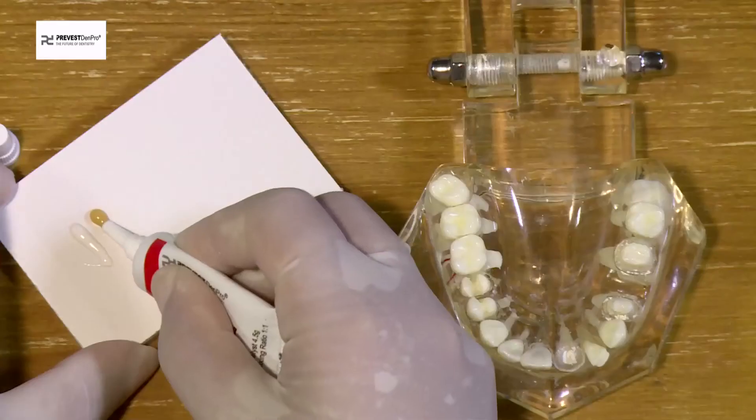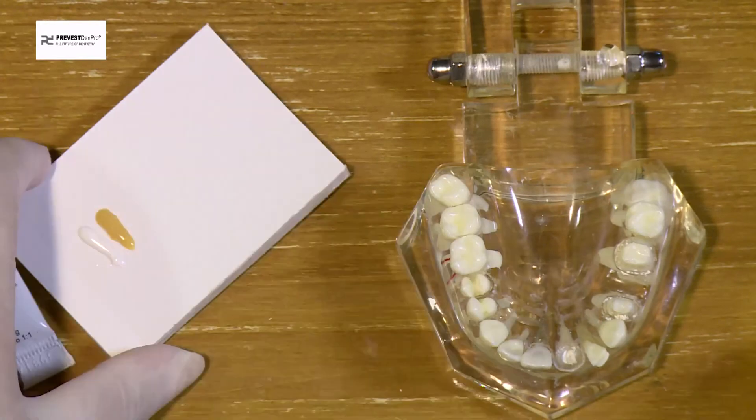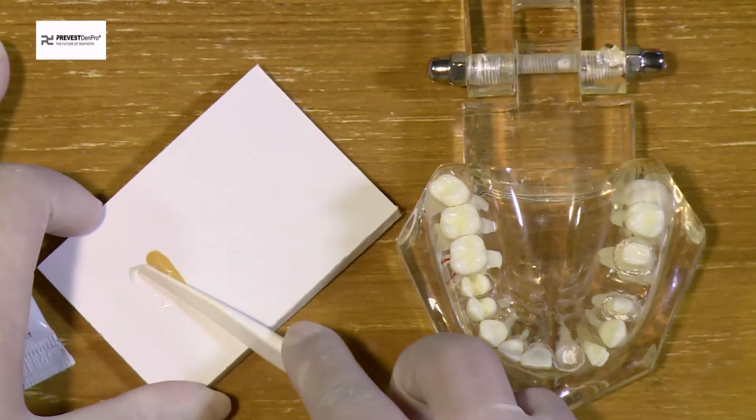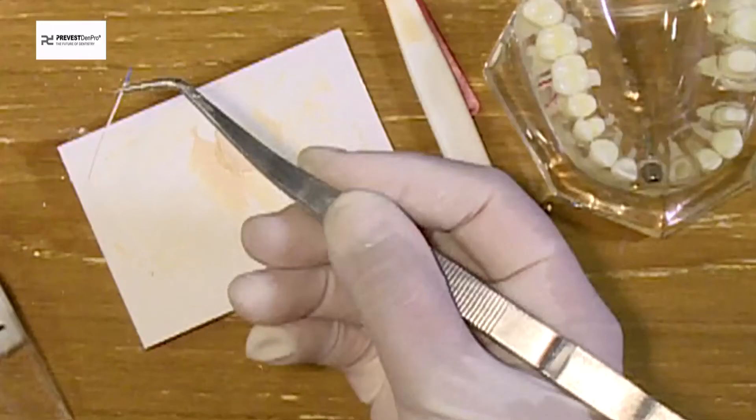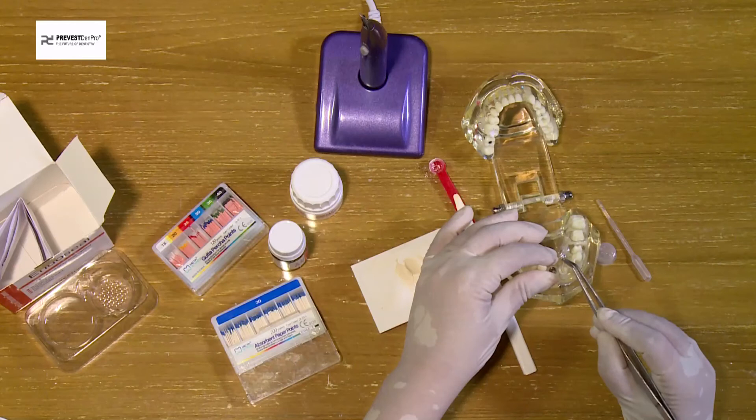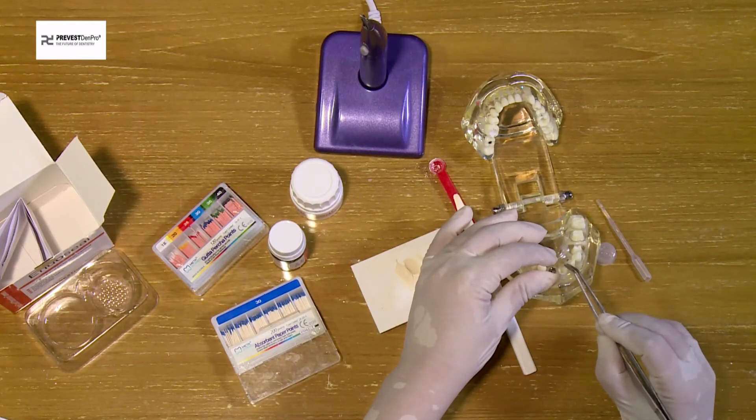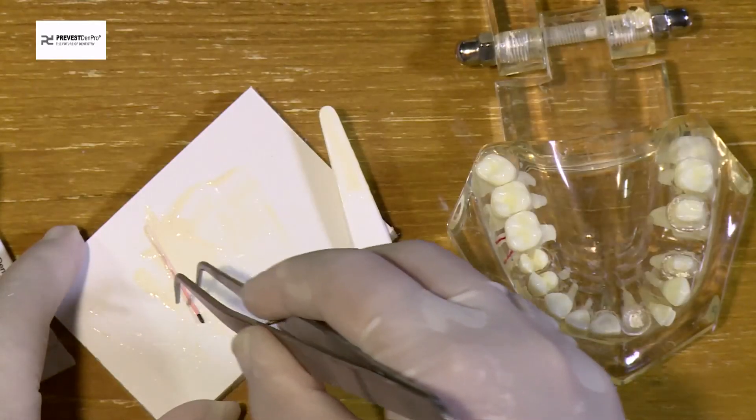The base and the catalyst are dispensed in a one-to-one proportion on the mixing pad. The pastes are mixed thoroughly to a creamy mix. The prepared root canal is then dried using a paper point.